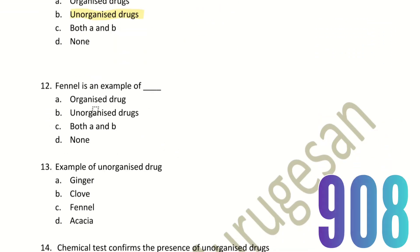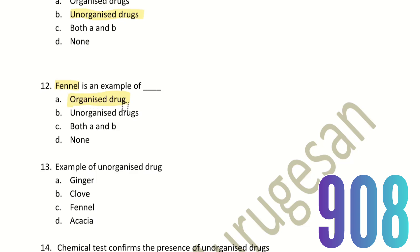Twelfth question: Fennel is an example of which? The choices are Organized Drugs, Unorganized Drugs, both A and B, and none. Fennel belongs to Organized Drugs because we can tell the size and shape of this plant.